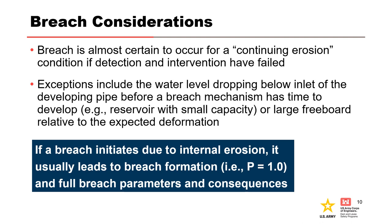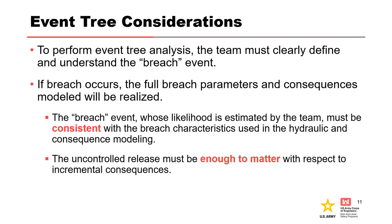If a breach initiates due to internal erosion, it usually leads to breach formation. Breach is almost certain to occur if a continuing erosion condition is expected for the filters or transitions, or there are no filters and detection and intervention have failed. Exceptions include the water level dropping below the inlet of the developing pipe before a breach mechanism has time to develop, and large freeboard relative to the expected deformation. For event tree analysis, the breach event must be clearly defined and understood by the team. The breach characteristics used in hydraulic and consequence modeling must be consistent with the breach event for which the likelihood of occurrence was estimated.